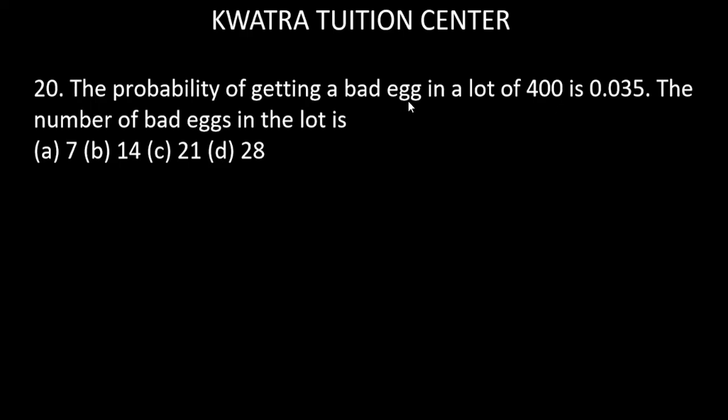The probability of getting a bad egg in a lot of 400 is 0.035. The number of bad eggs in the lot is unknown. The probability is 0.035, and the total number is given as 400.